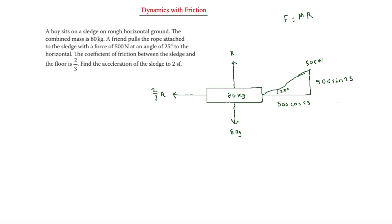First we need to work out R, then use R to find friction, then find acceleration using F = ma. To find R we resolve vertically: R plus 500 sin 25 equals 80g, where 80g is 80 times 9.8. Therefore R is equal to 572.7 newtons.